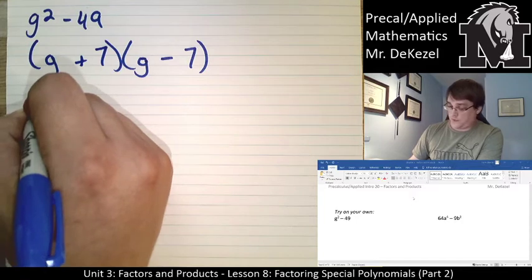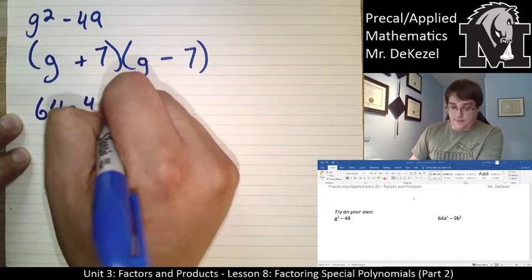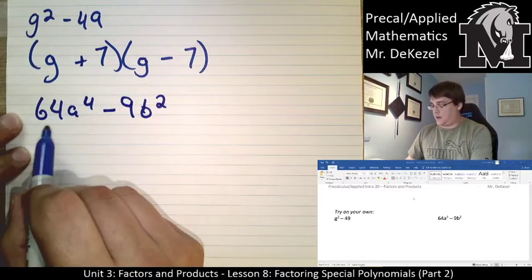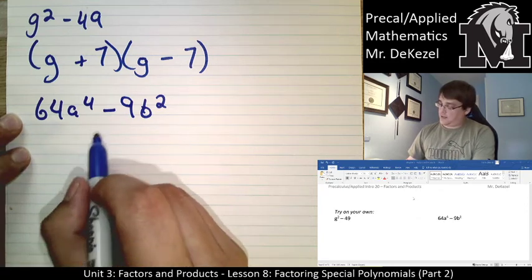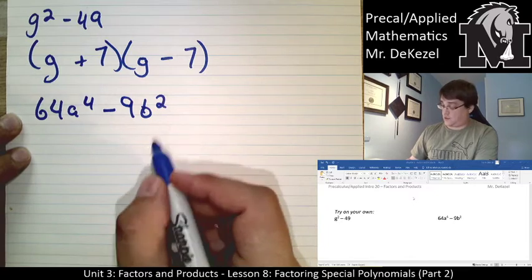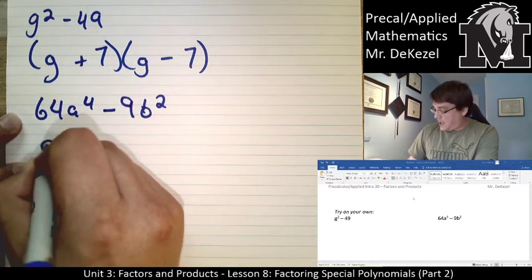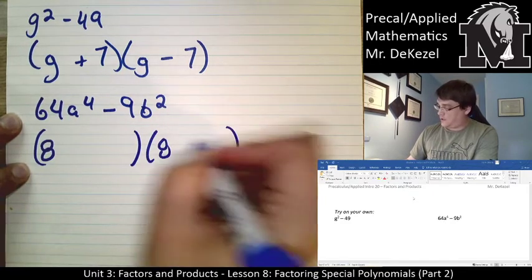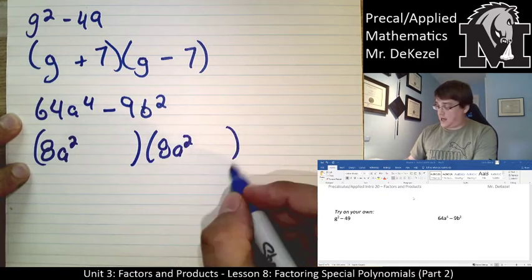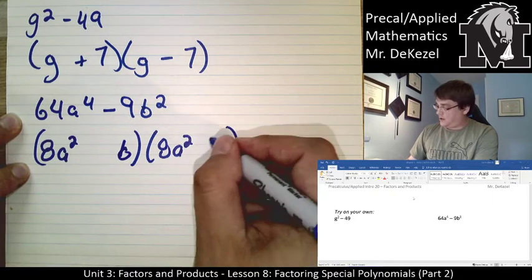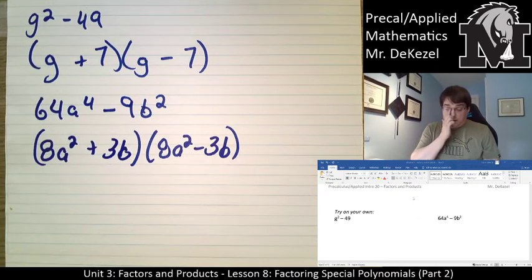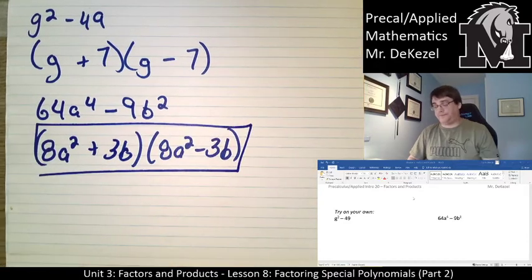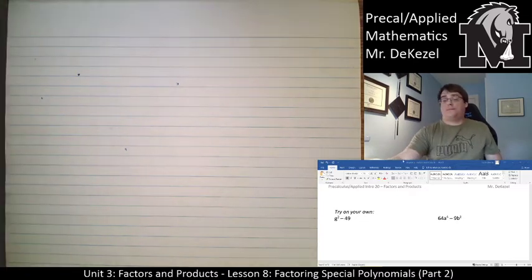Next: 64a to the power of 4 minus 9b squared. The greatest common factor here is 1. Both terms are perfect squares, so this is a difference of squares problem with a zero middle term. We use 8 times 8 to make 64, a squared and a squared, and then 3b and 3b to make 9b squared. One is positive and one is negative, giving us (8a² + 3b)(8a² - 3b). You can't break either factor down further — this is the final answer.